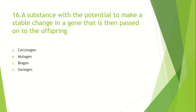A substance with the potential to make a stable change in a gene that is then passed to offspring — that means mutation: Option A: Carcinogen. Option B: Mutagen. Option C: Biogen. Option D: Geneagen. From the concept it is clear that the answer is mutagen, meaning genetic alterations and mutations passed to offspring.